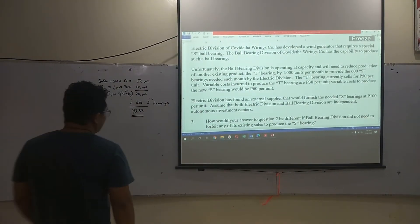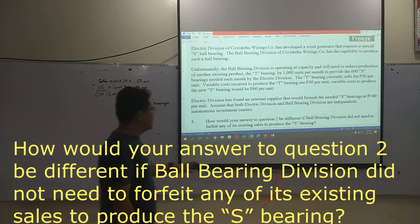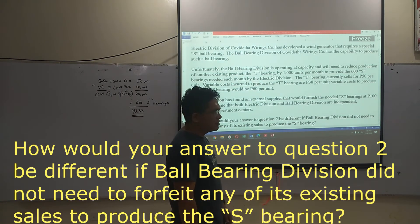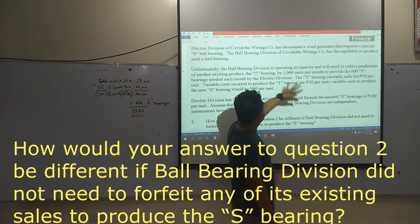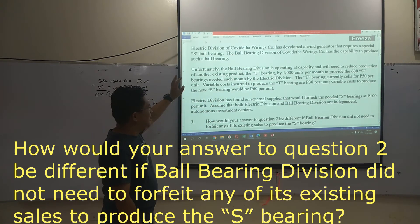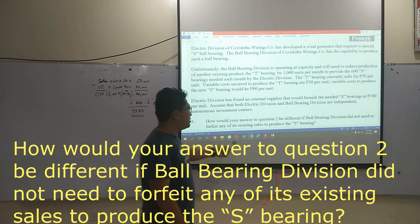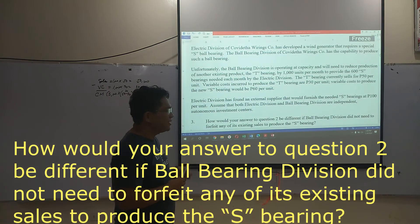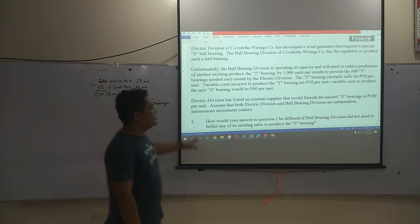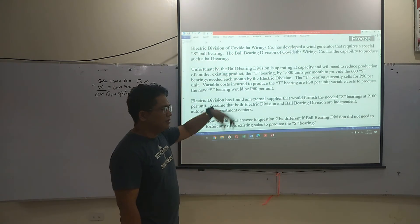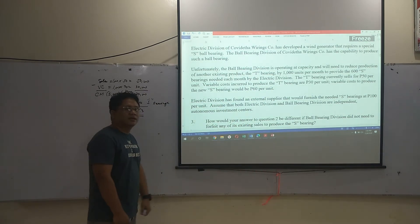The next question is: how would answer number two be different if ball bearing did not need to forfeit any of its existing sales to produce the S bearing? If ball bearing can produce the 600 S bearings without forfeiting existing sales to other clients, then the minimum price that ball bearing should charge electric division would simply be the variable cost to produce the S bearing, which is $60 per unit.